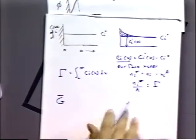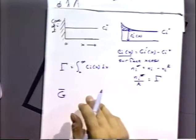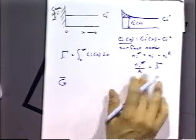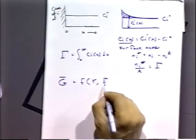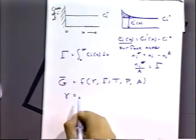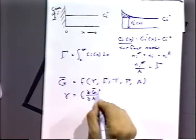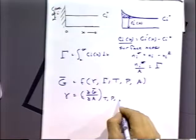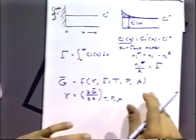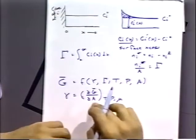The free energy at the interface is ΔG (with an overline indicating electrochemical quantities). Just as before, we draw a line over chemical potentials to make them electrochemical potentials. The electrochemical free energy of the interface is a function of surface tension, surface excess amount, temperature, pressure, and area. In other words, our surface tension is the gradient of the surface free energy as a function of area at constant temperature, pressure, and chemical potential. By changing the surface free energy, we can obtain the surface tension.